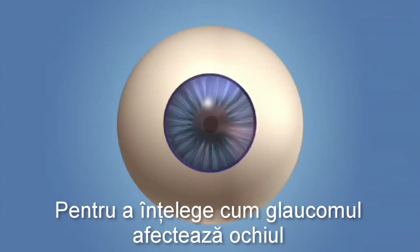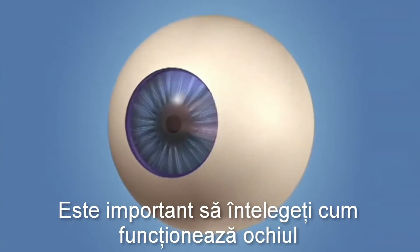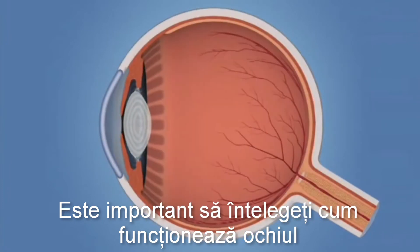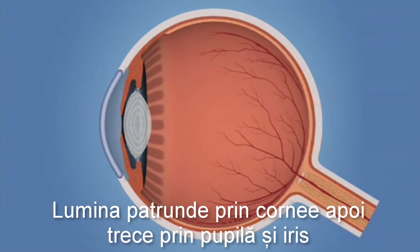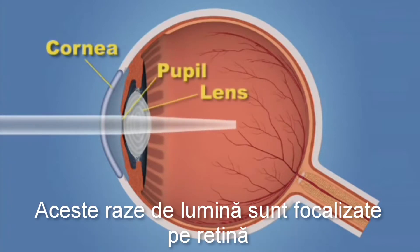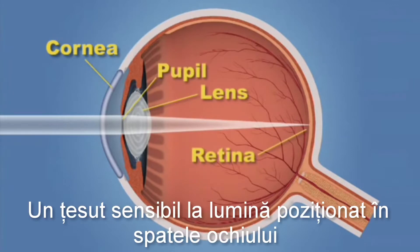To understand how glaucoma affects your eyes, it is important to understand how your eye sees. Light rays enter the eye through the clear cornea, then through the pupil and the lens. These light rays are focused onto the retina, a light-sensitive tissue lining the back of the eye.